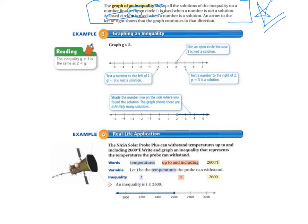So we're going to graph G greater than 2. So we would use an open circle because 2 is not a solution, because 2 is not greater than 2. And so we test a number that is to the left of 2. G equals 0 is not a solution, so we wouldn't want to run our line anywhere to the left. And we would test a number to the right of 2, which is 3. 3 is a solution because 3 is greater than 2.